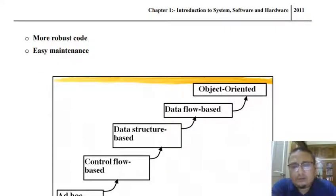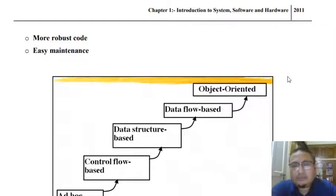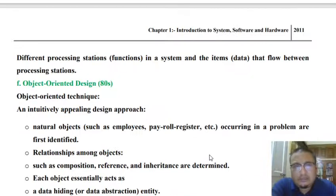Then came the object-oriented approach, where emphasis was given to objects and the relationships participating in realizing a particular system. Objects were identified, attributes were identified, methods were identified, and then relationships were established to realize a system. Then came the service-oriented approach. So the progression has taken the route from ad hoc to control flow based to data structure based to data flow based to object-oriented and then service-oriented approach.